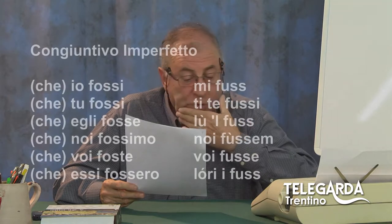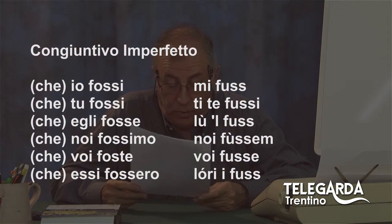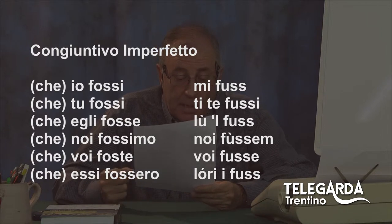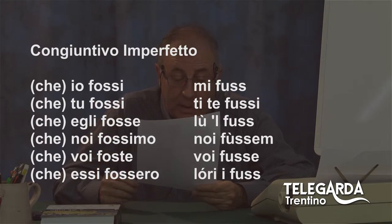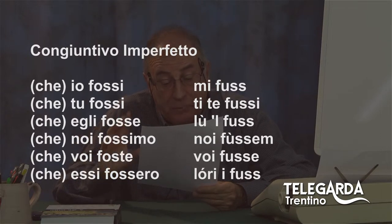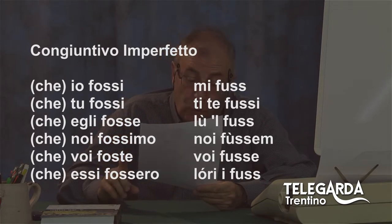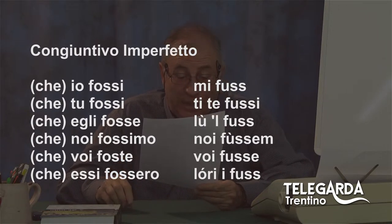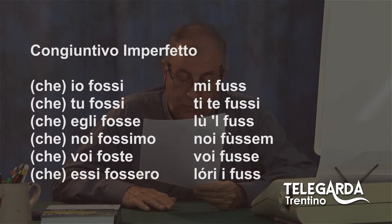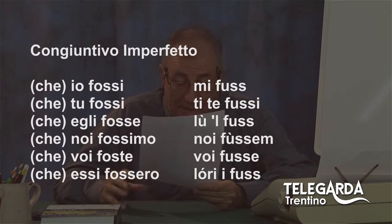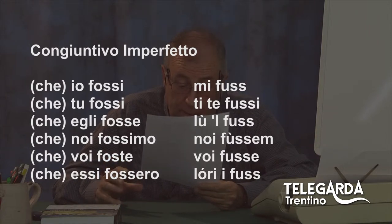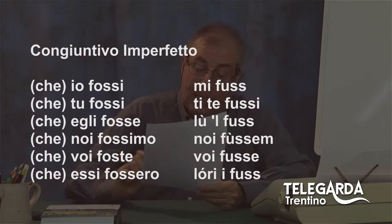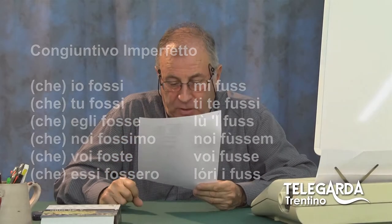Il congiuntivo imperfetto: che io fossi, che tu fossi, che egli fosse, che noi fossimo, che voi foste, che essi fossero. In dialetto: i dis che mi fus sta un bravo ingegnere. I dis che ti te fussi un bravo ingegnere. I dis che l'ul fus un bravo ingegnere. I dis che noi fussem, accento tonico sulla U mi raccomando, dei bravi ingegneri. I dis che voi fusse dei bravi ingegneri. I dis che lori i fus dei bravi ingegneri.